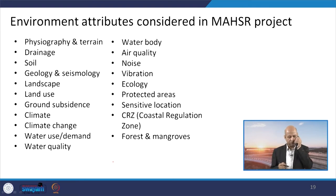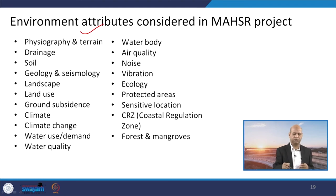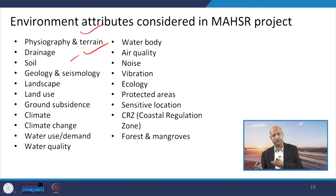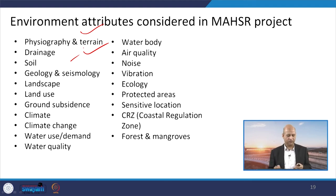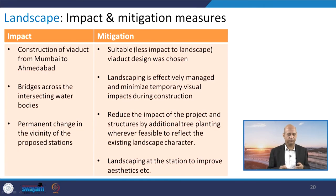The environmental attributes considered for this detailed EIA include physiography, geography, terrain, drainage, soil, geology, seismological aspects, land use patterns, coastal regulation zones, ecology of every section, air quality, and noise. All these aspects have been thoroughly addressed.